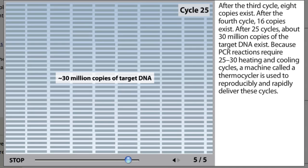Because PCR reactions require 25 to 30 heating and cooling cycles, a machine called a thermocycler is used to reproducibly and rapidly deliver these cycles.